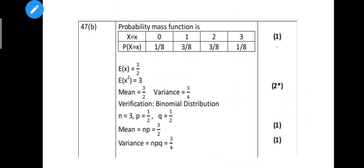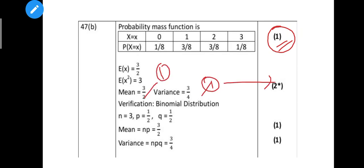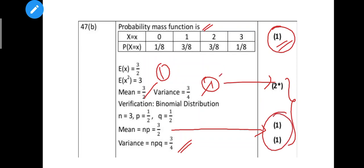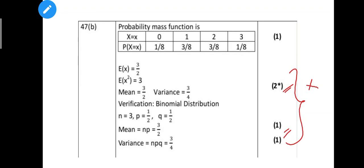Next, probability mass function: add the table, then add the truth. Next, add the value of C. Given the values, find the value of C - we have the value and the value of C. This is the full analysis of the marks key. Next is physics. Thank you.